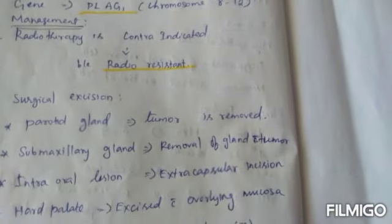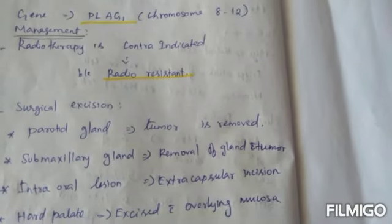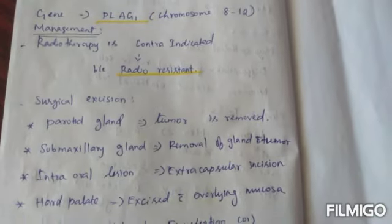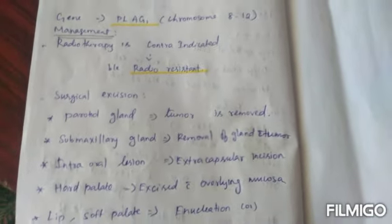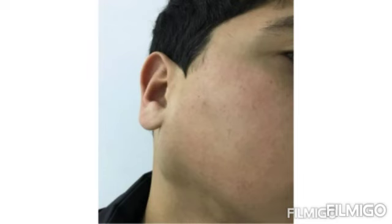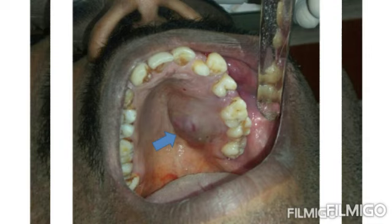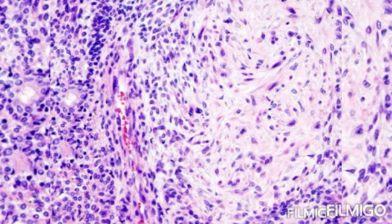Surgical excision is the treatment of choice. For parotid gland tumors, the involved lobe of the gland must be removed. For the submandibular gland, removal of the gland and tumor in continuity is performed. The picture shows pleiomorphic adenoma affecting the parotid gland with smooth skin over the tumor. If it increases in size, it produces facial disfigurement. Another picture shows pleiomorphic adenoma on the palatal aspect. Histopathologically, it presents epithelial and mesenchymal cells — epithelium on the left side and mesenchyme on the right.